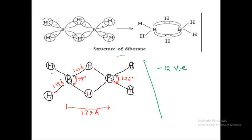In B2H6, there are six hydrogens. The two H in the middle — I'm writing these in a different color — these two H in the middle are called bridging hydrogens. These two hydrogens are the bridging hydrogens.